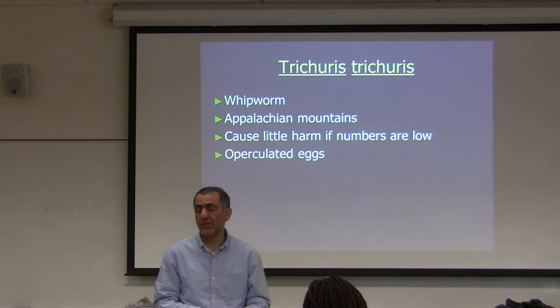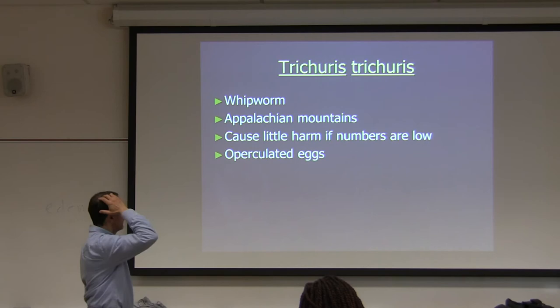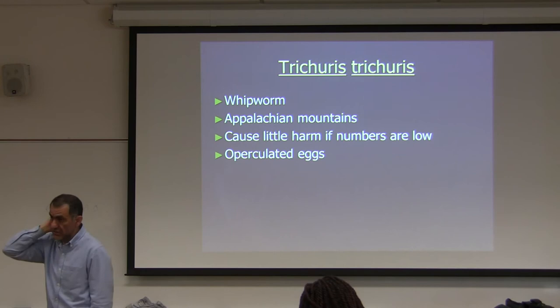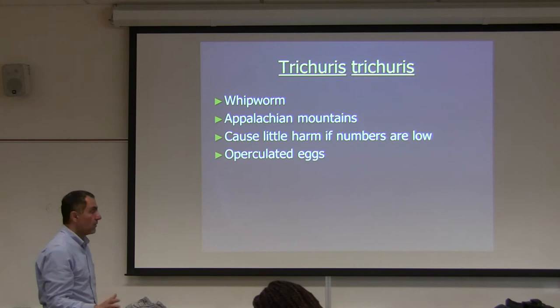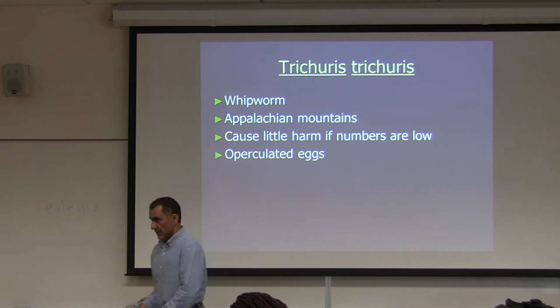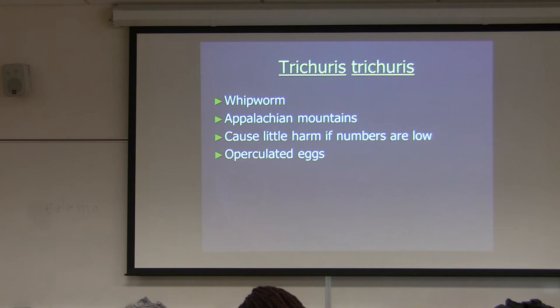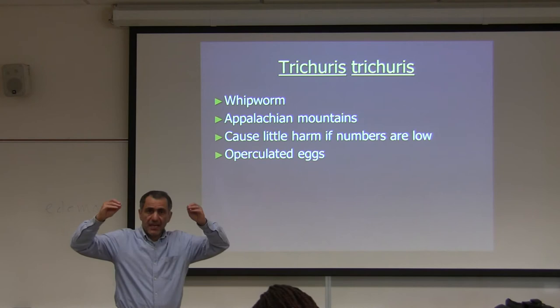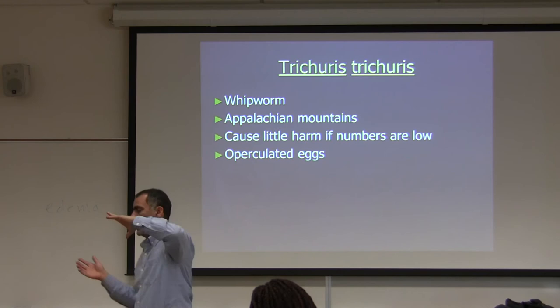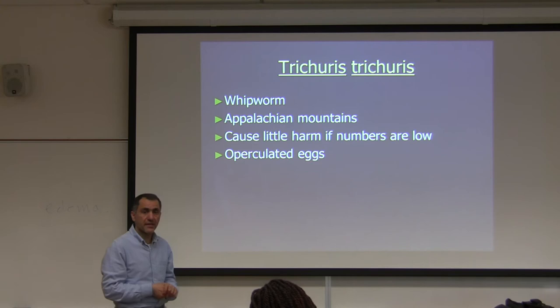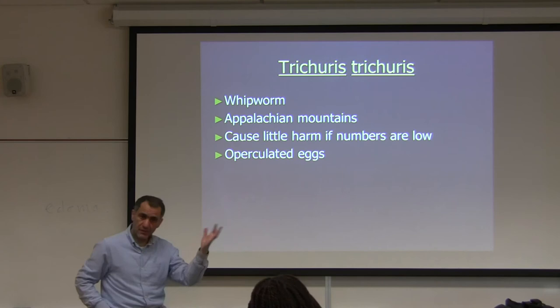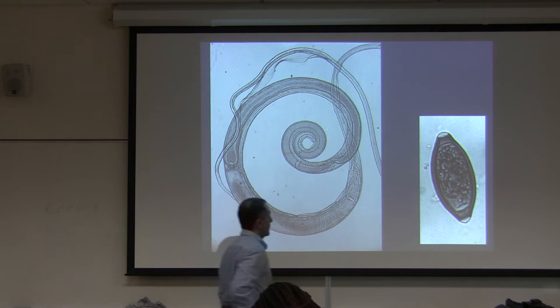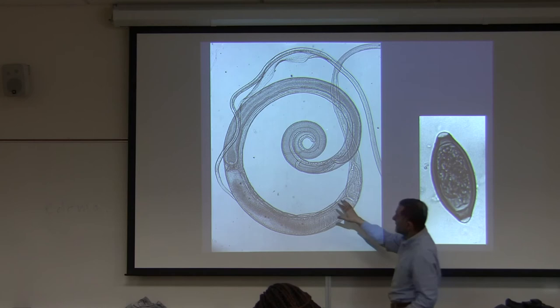Trichuris trichiura is the whipworm. In the lab you have slides of whipworm eggs. It is found in the Appalachian mountains but is cosmopolitan worldwide. The eggs have opercula on both ends — like Clonorchis sinensis or Fasciola hepatica, which also have operculated eggs. The L1 larva emerges from one of the ends.